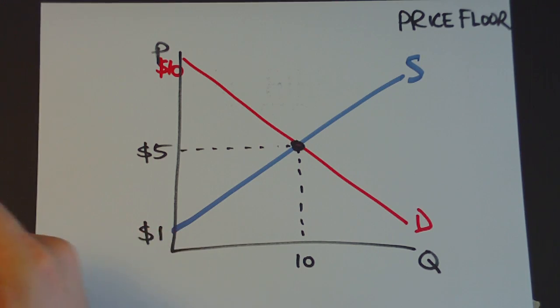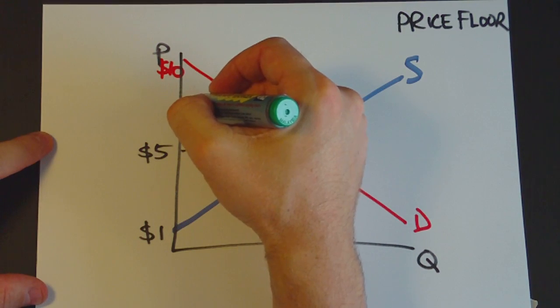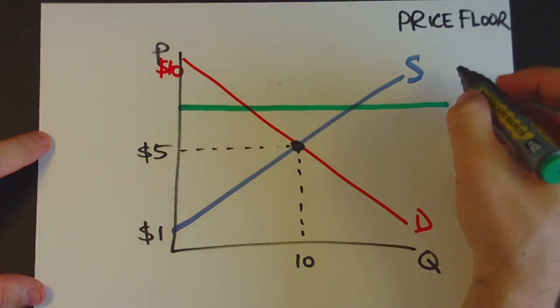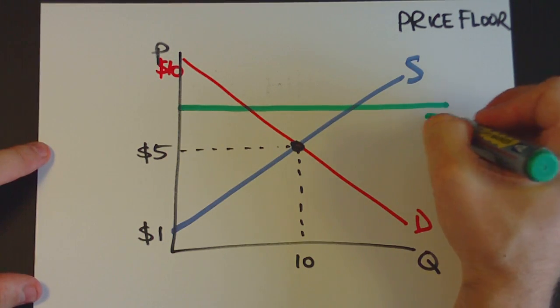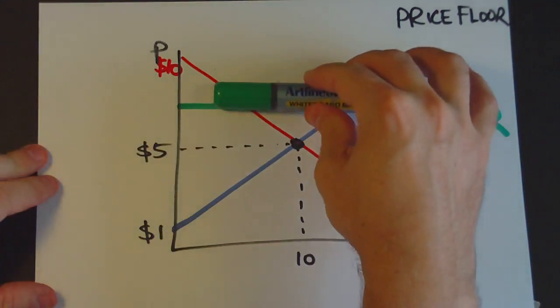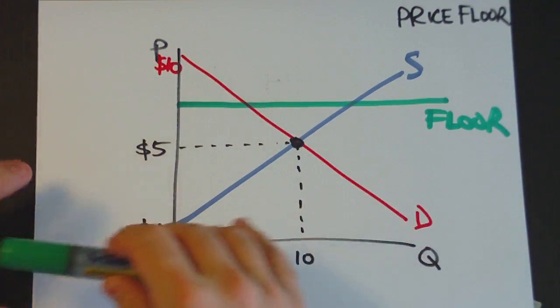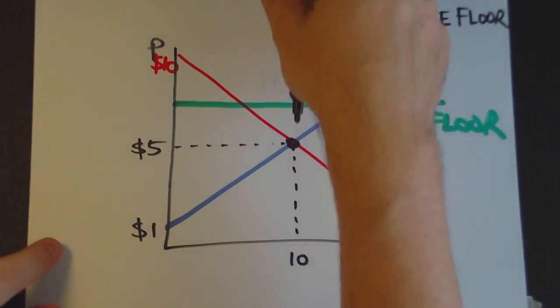Let's say that the government interferes in the market mechanism and introduces a price ceiling of, say, $7. Sorry, a price floor of $7. Now, despite its name, price floors are up high. They're normally above the equilibrium point. And the whole point of a price floor is that it prevents the price